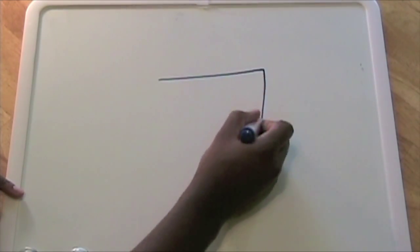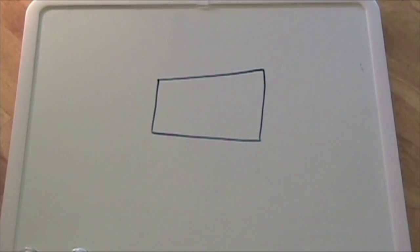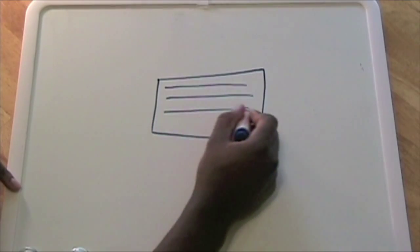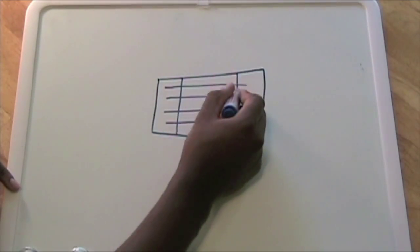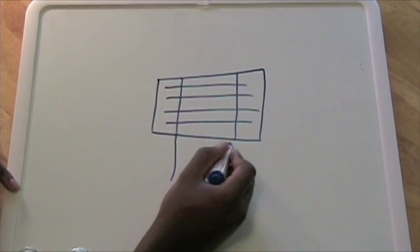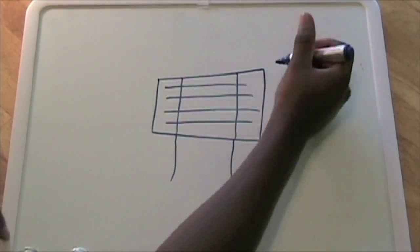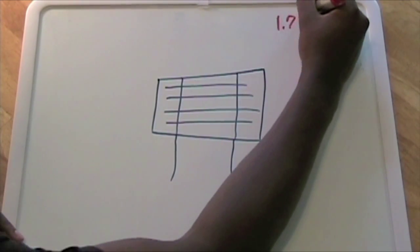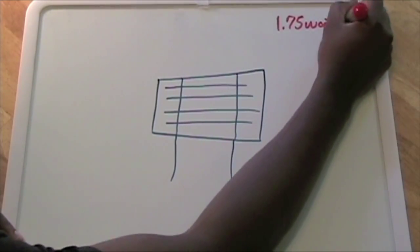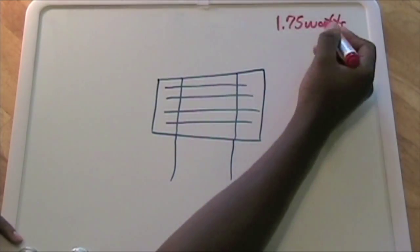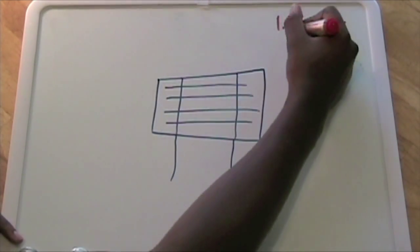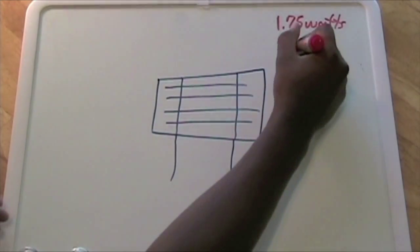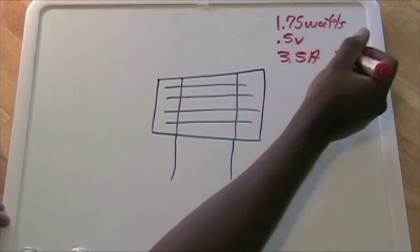We have a solar cell. What we know about this solar cell is it produces 1.75 watts, and this is an evergreen solar cell. It produces 0.5 volts and it produces 3.5 amps - one solar cell.